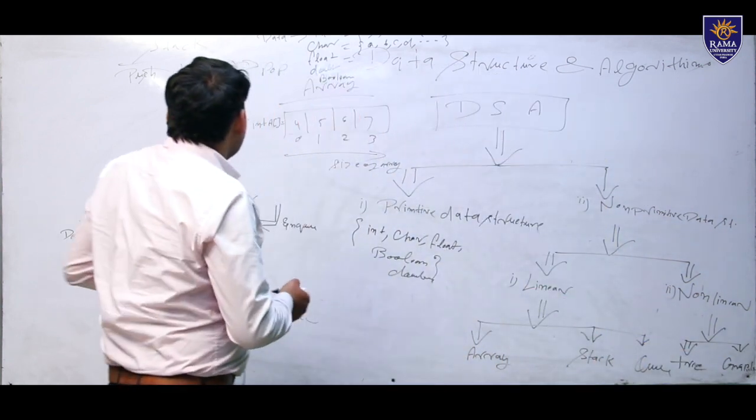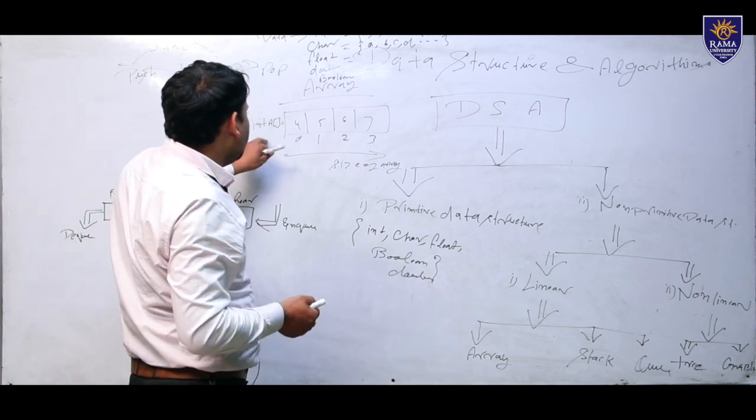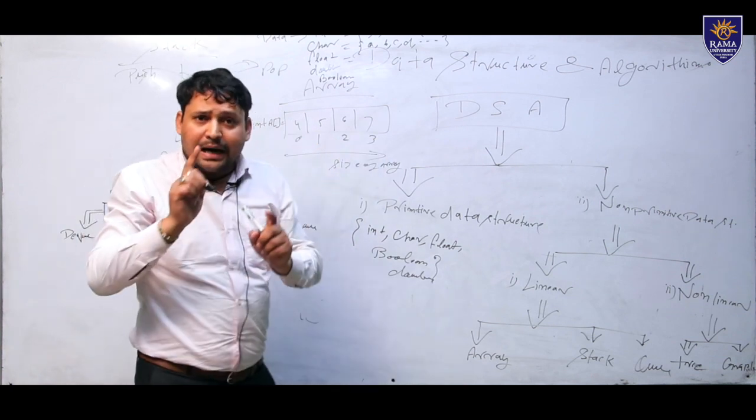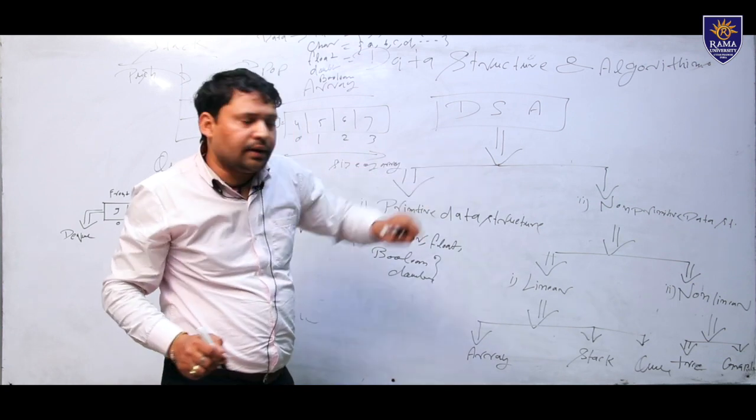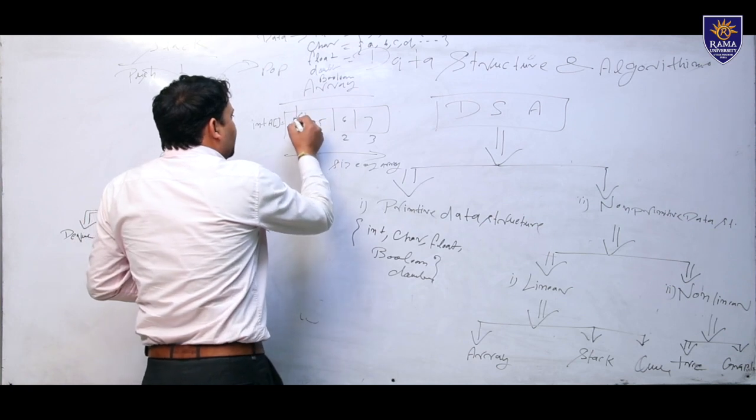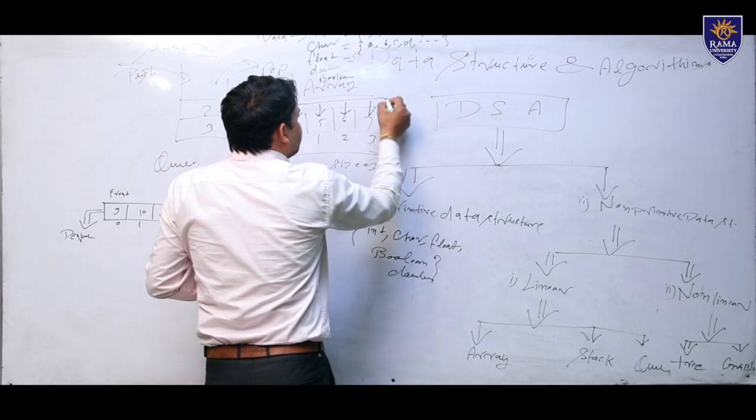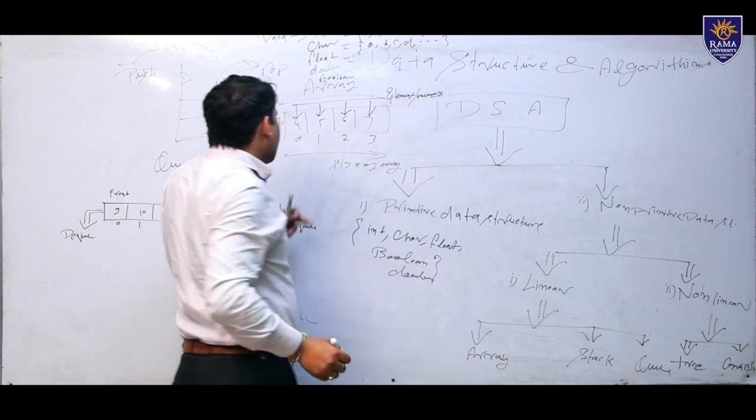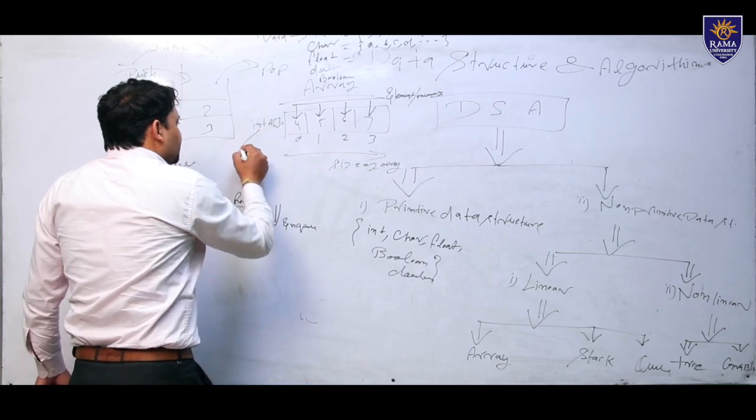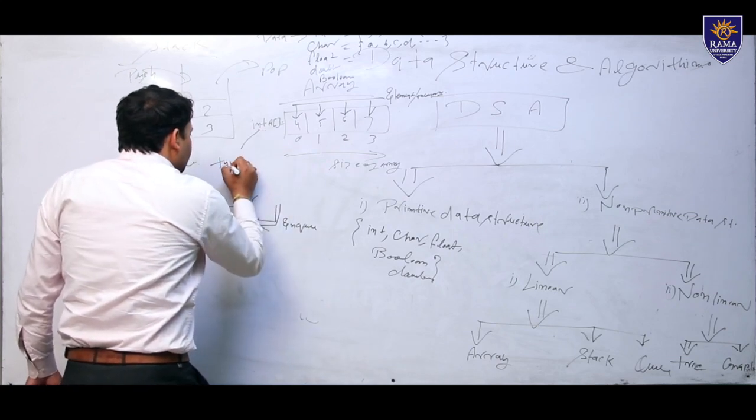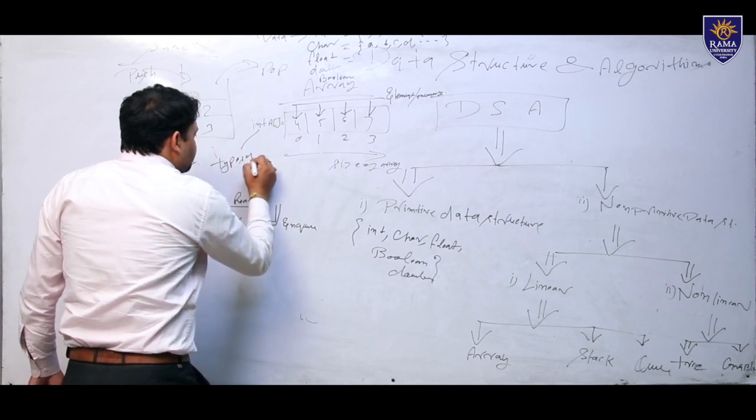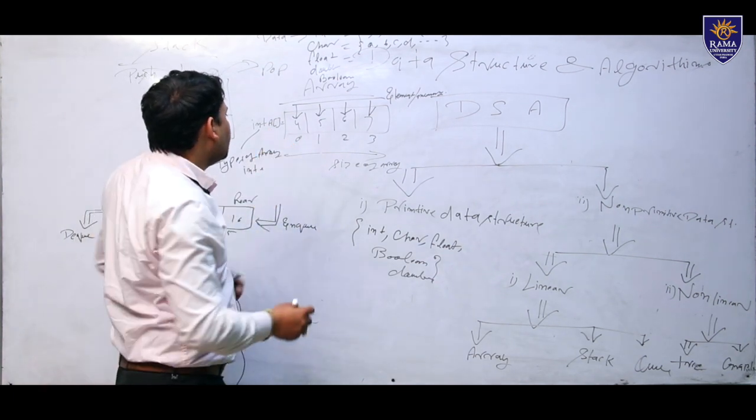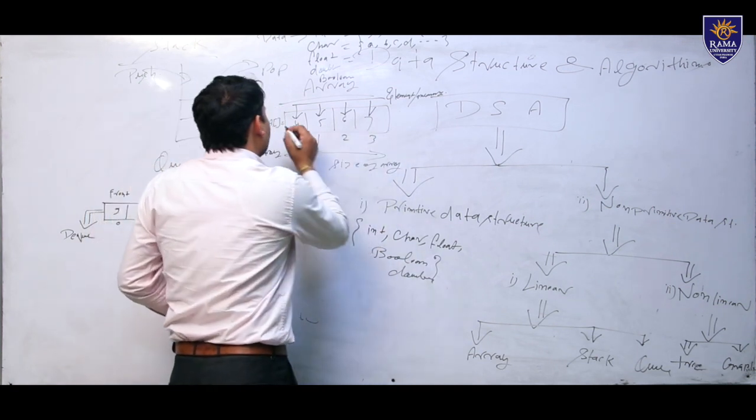First, array. Array is a linear data structure where index starts with 0, 1, 2, 3 and so on. We put elements 4, 5, 6, 7. These are elements and memory. Index 0, 1, 2, 3 and so on. Array type: integer, name A, and size of array equals 4.